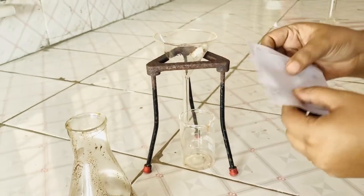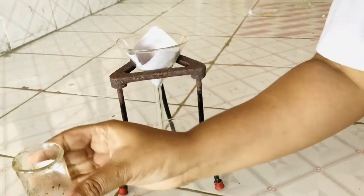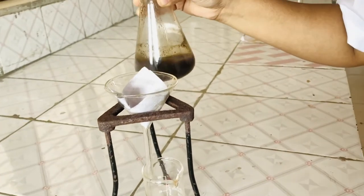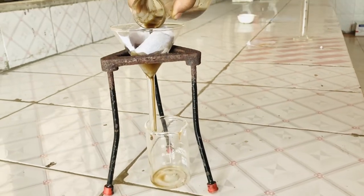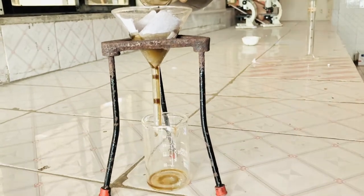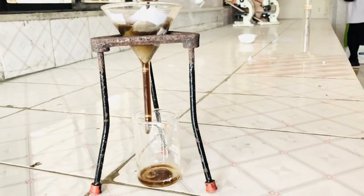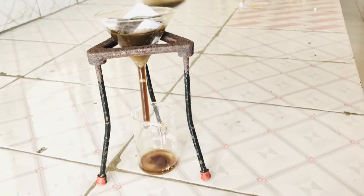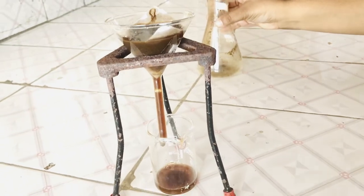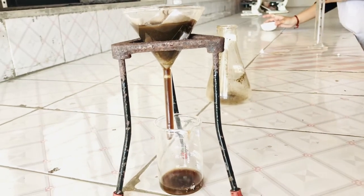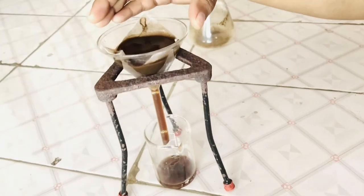Slowly we have added the funnel. Now we are adding filter paper on the funnel like this and we would pour the contents of the conical flask through the filter paper. Add slowly. You can see the contents are pouring down. We would collect the extract and discard the residue. It will take a little time.